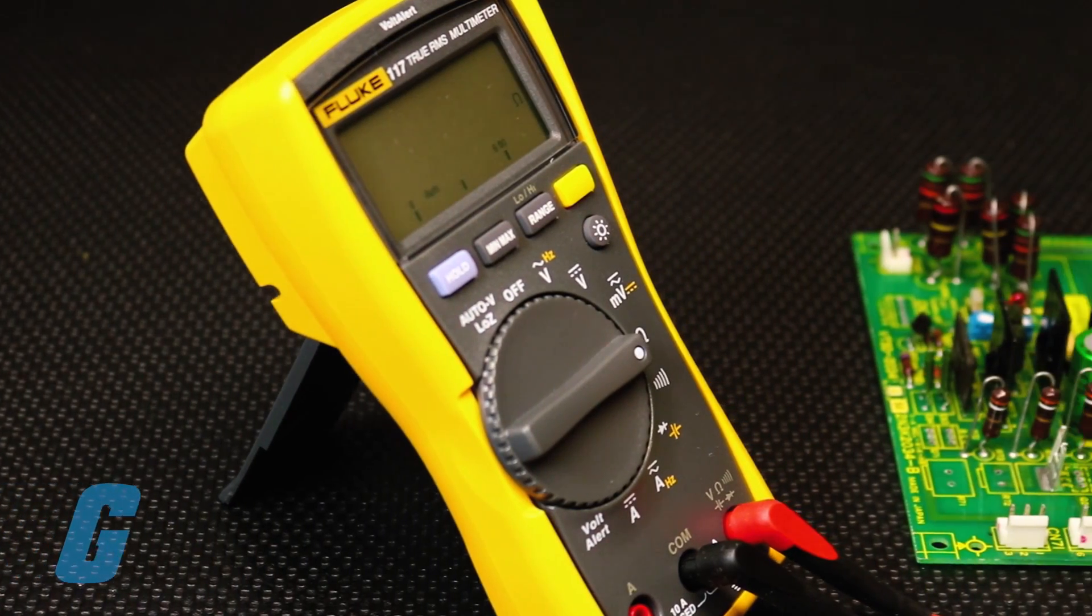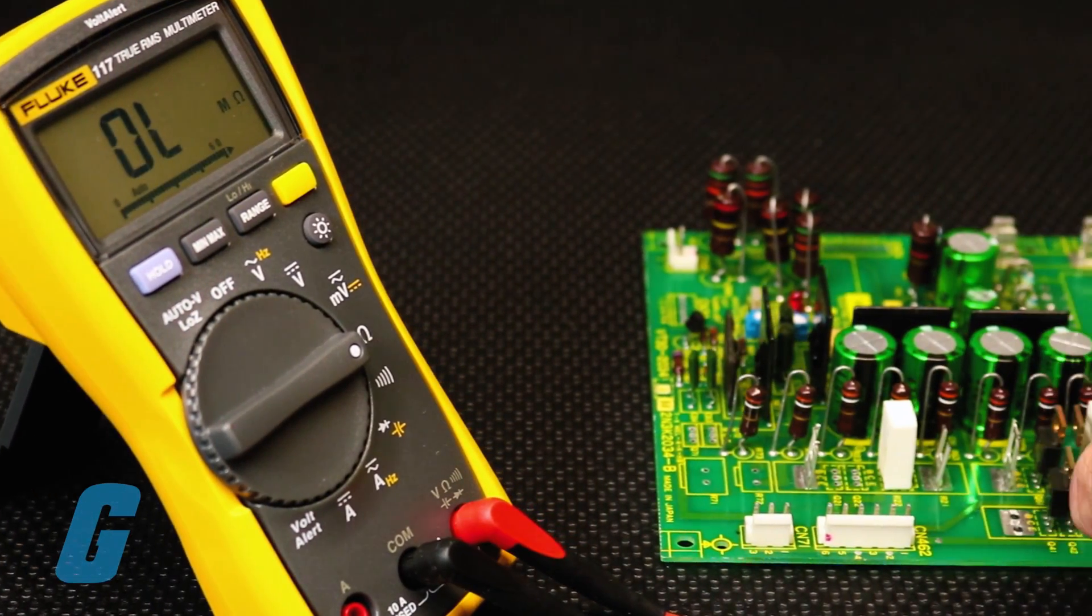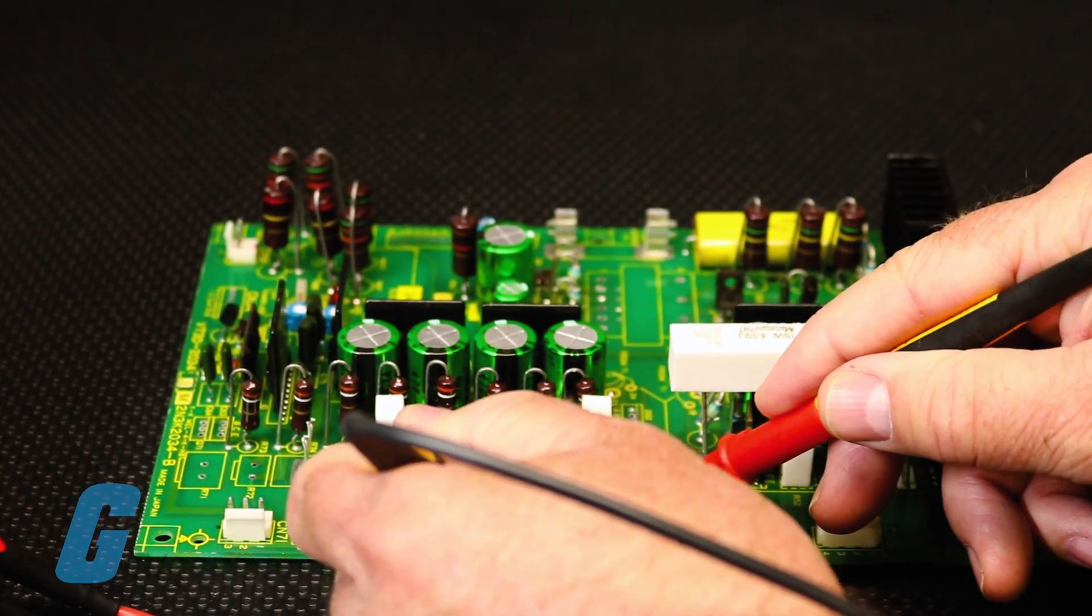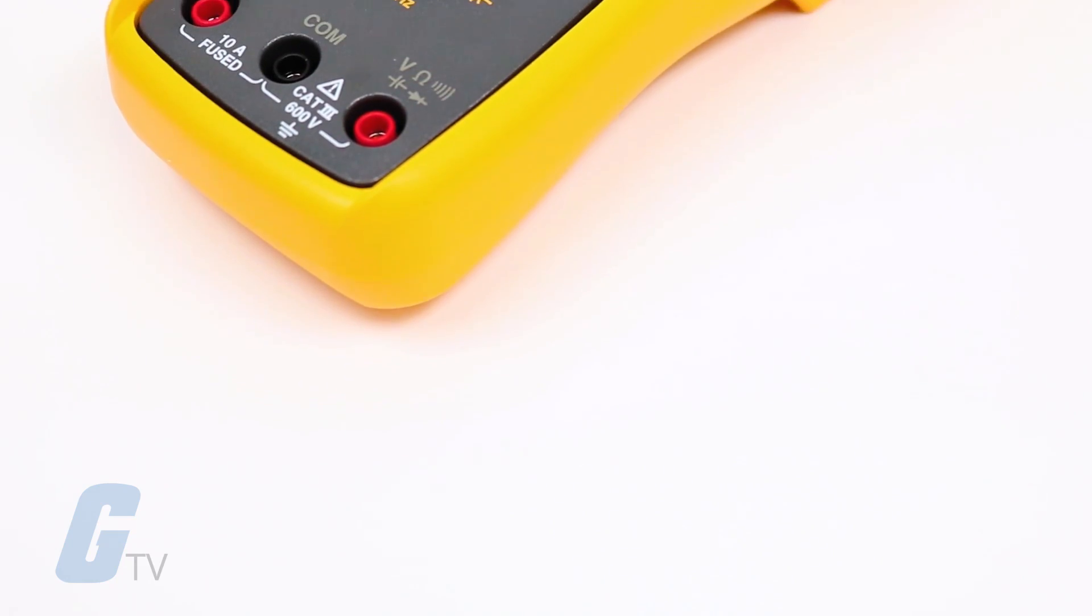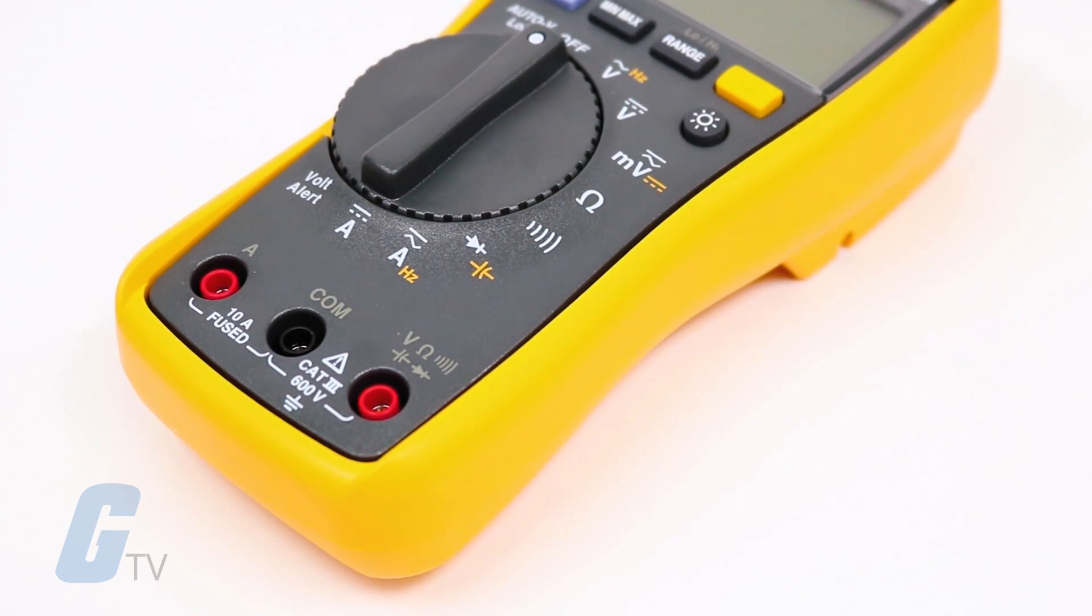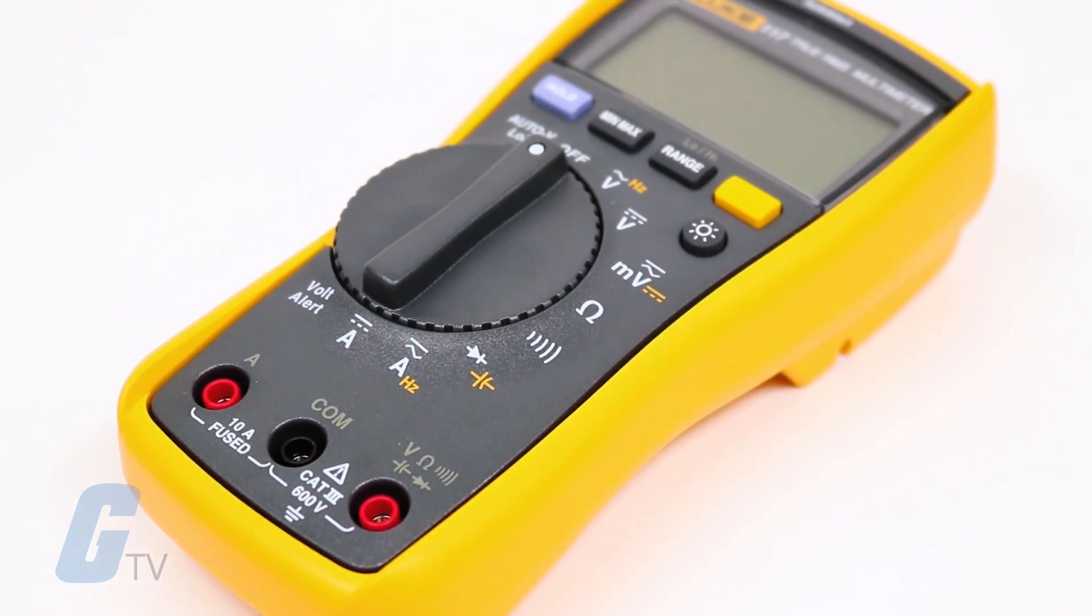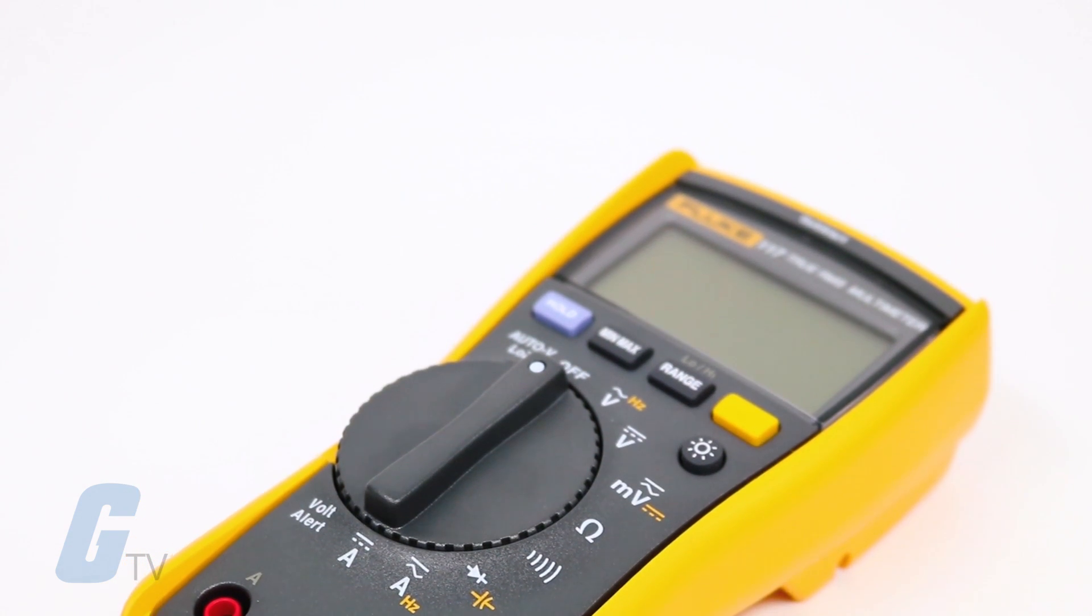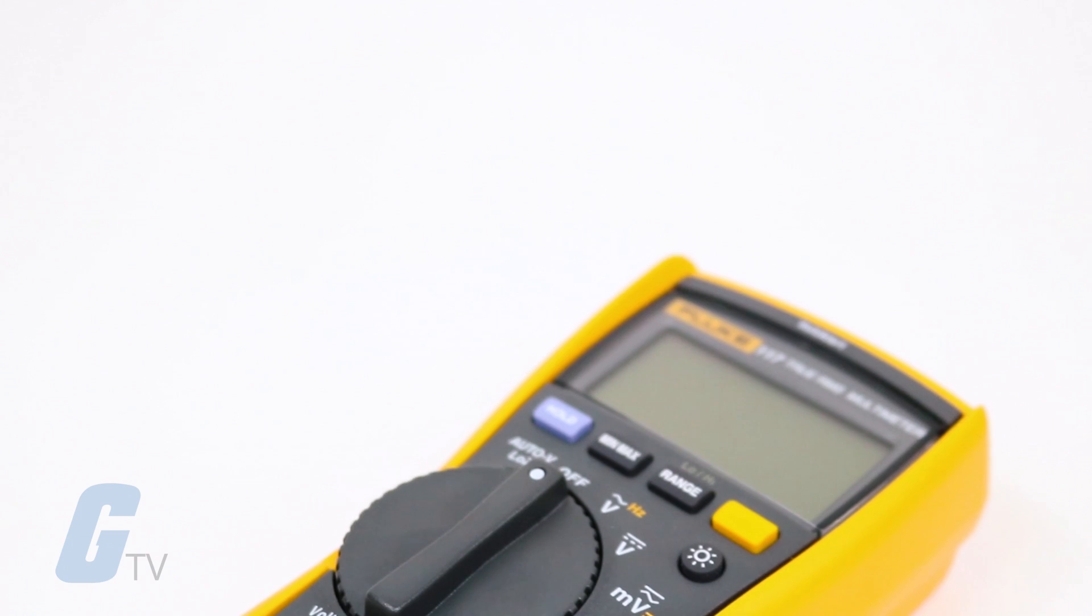The Fluke 117 Multimeter is a compact, true RMS suitable for commercial applications. It includes features such as Volt Alert Technology for non-contact voltage detection, AutoVolt Automatic AC-DC Voltage Selection, a large white LED backlit screen for use in poorly lit areas and more.